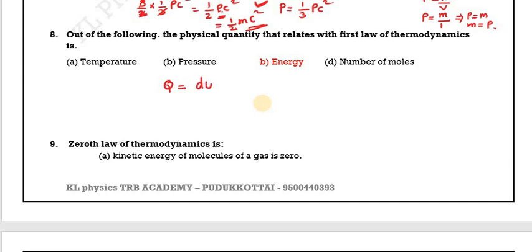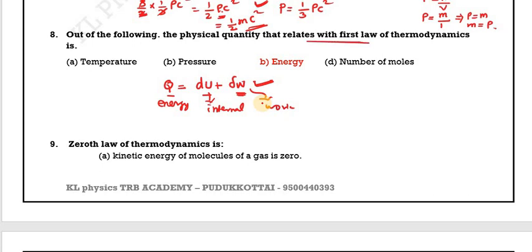Question 8: Heat energy equals internal energy change plus work done. This is the first law of thermodynamics. Q equals delta U plus W. Out of the following physical quantities, heat energy relates to the first law of thermodynamics.